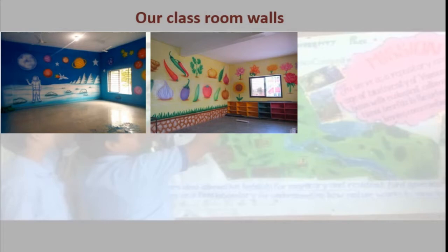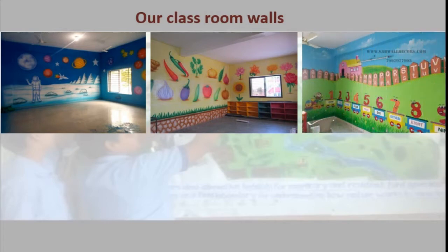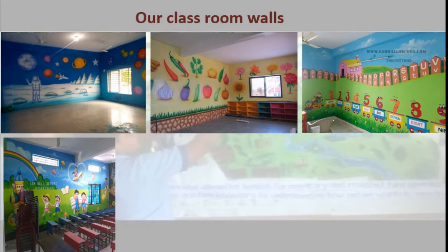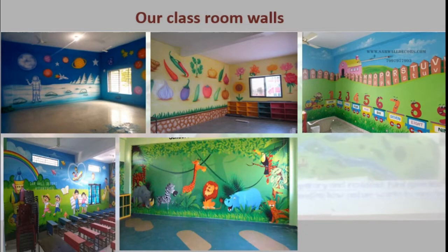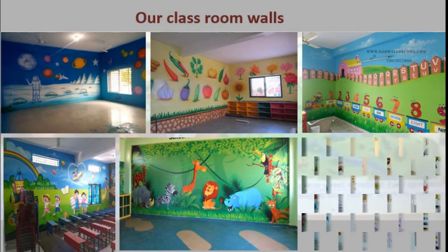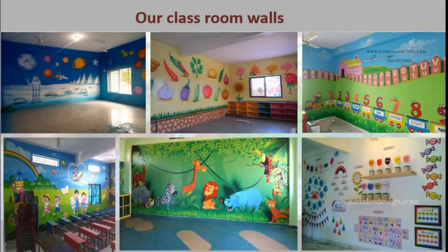Here we can see different vegetables and flowers. Here we can see different numbers along with pictures and also alphabets — I think this is our pre-primary class. Here we can see a poem in English, different animals, and the grammar part of English. The reason behind this decoration is to attract small children towards school and to encourage self-study among them, because small children grasp very quickly. Daily they look and observe these pictures and come to know new things.